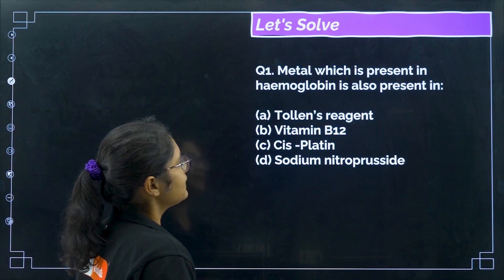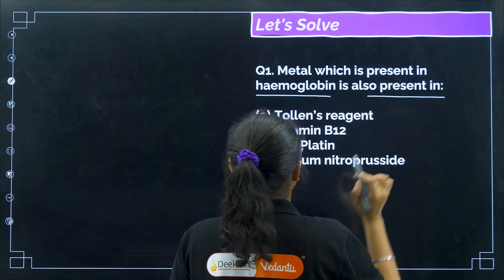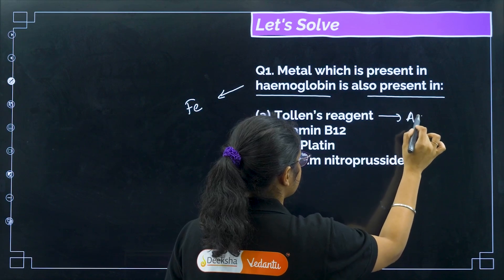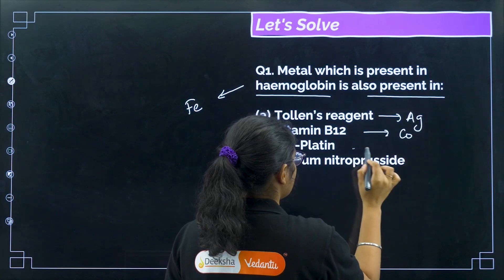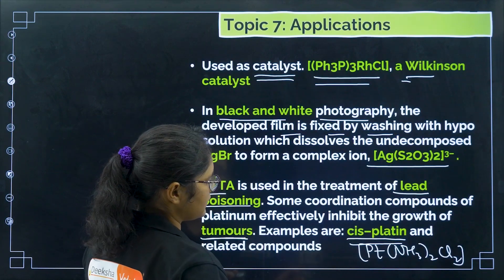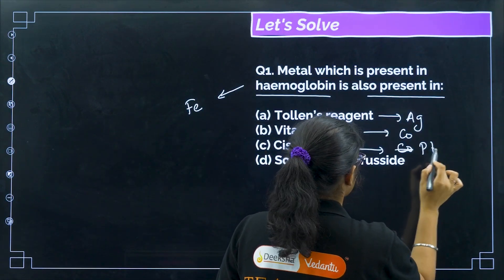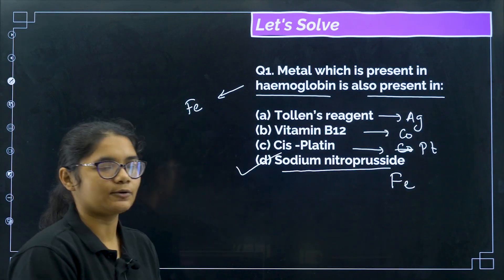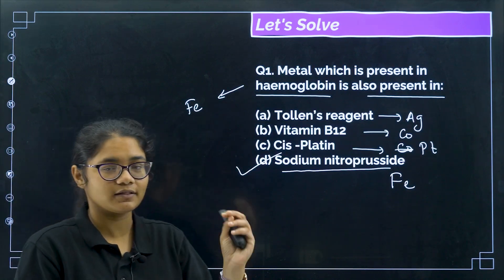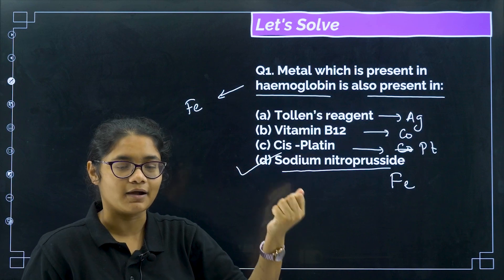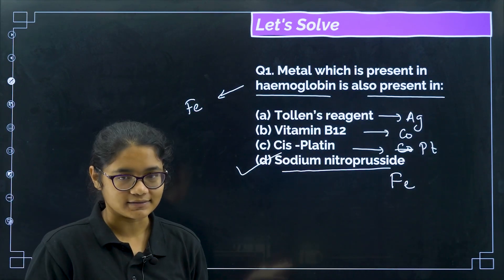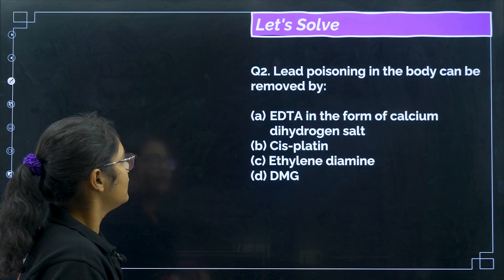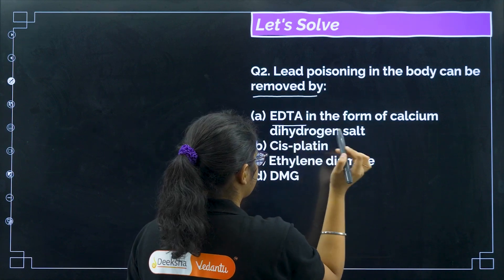Practice question: which metal is present in hemoglobin? Iron. Tollens' reagent contains silver. Vitamin B12 contains cobalt. Cisplatin contains platinum. Sodium nitroprusside contains iron. The correct answer is option D. This shows how tricky questions can be — you must know these coordination compounds and their metals to answer correctly. Next, lead poisoning in the body can be removed by EDTA in the form of calcium dihydrogen salt — option A.